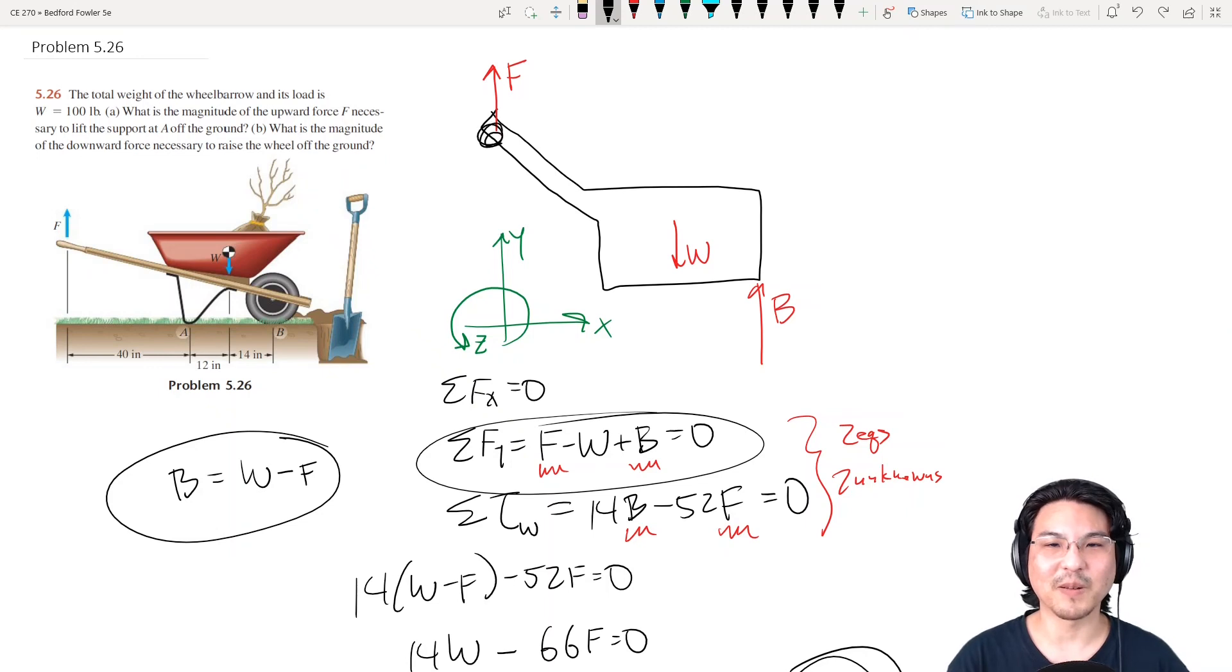When I sum the torque about here, there is no torque due to this force. So that's getting rid of one unknown. If I sum the torque about here, there's no torque due to this force. So that's one less unknown. Okay, let's do part B.